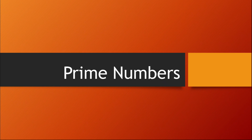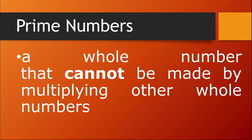We have an example here using Java that will determine if a number is prime or not. But before that, let us first have the definition of prime numbers. Prime numbers are a whole number that cannot be made by multiplying other whole numbers. Simply, a number is prime if it cannot be divided evenly, and if it can be divided evenly, then it is a composite number.